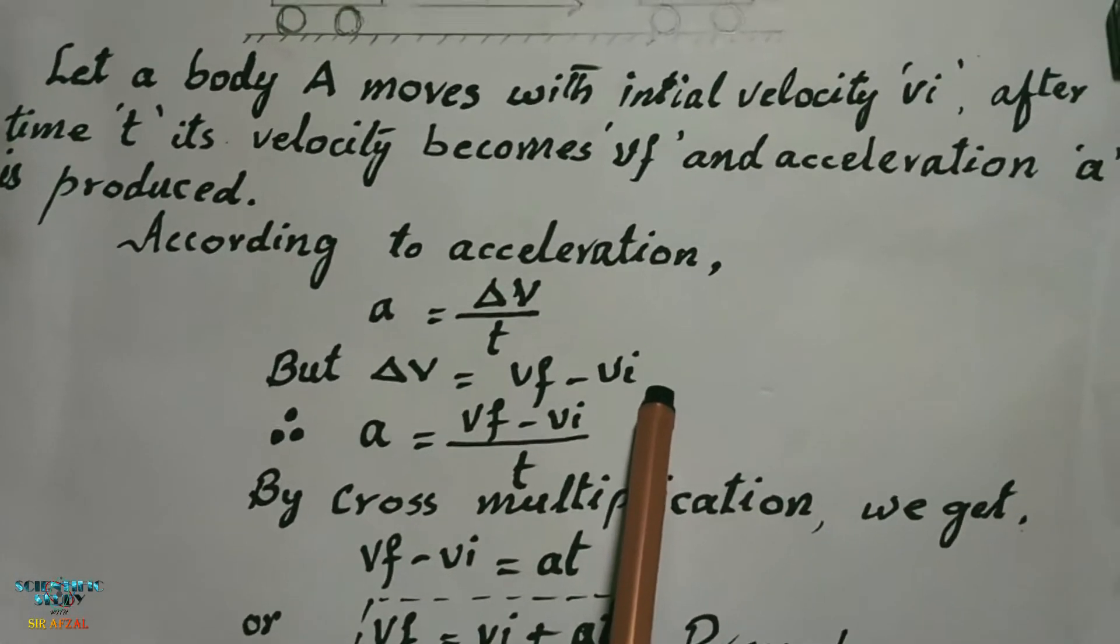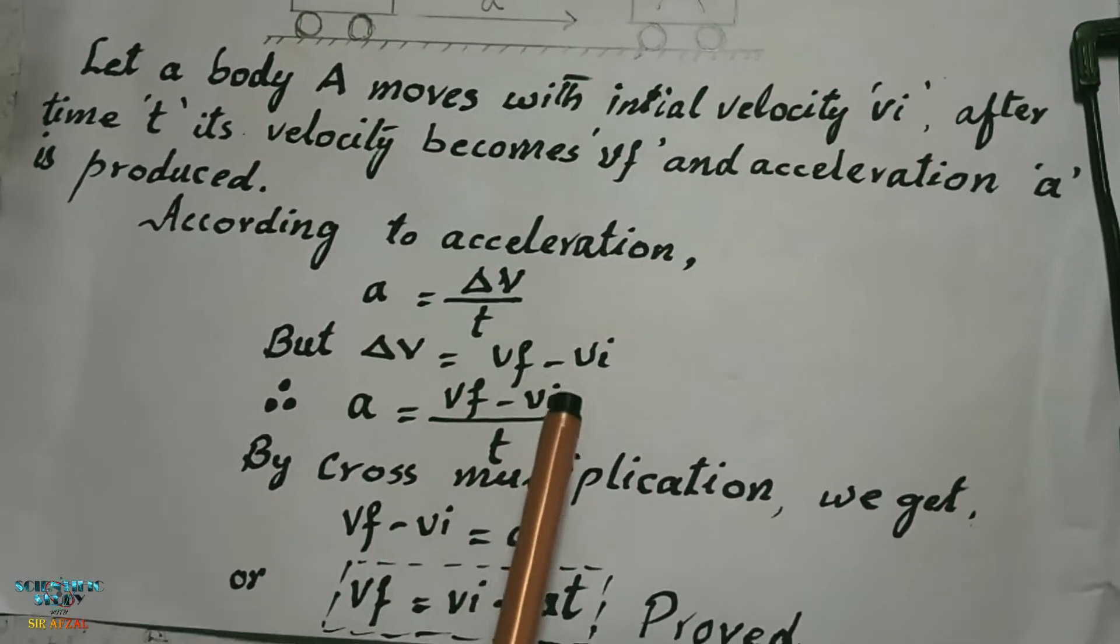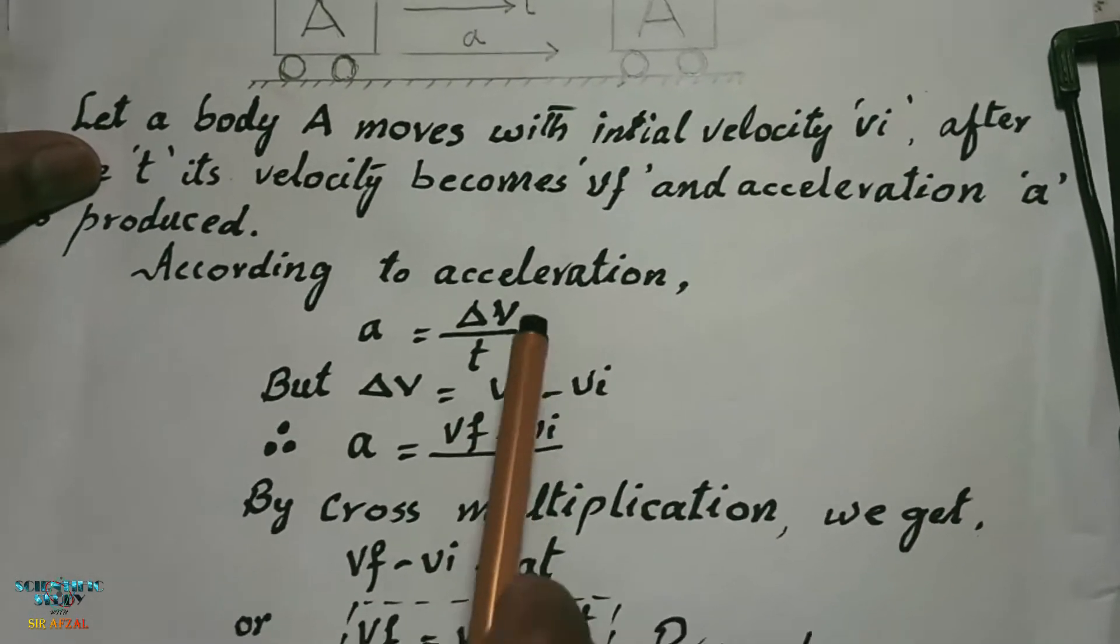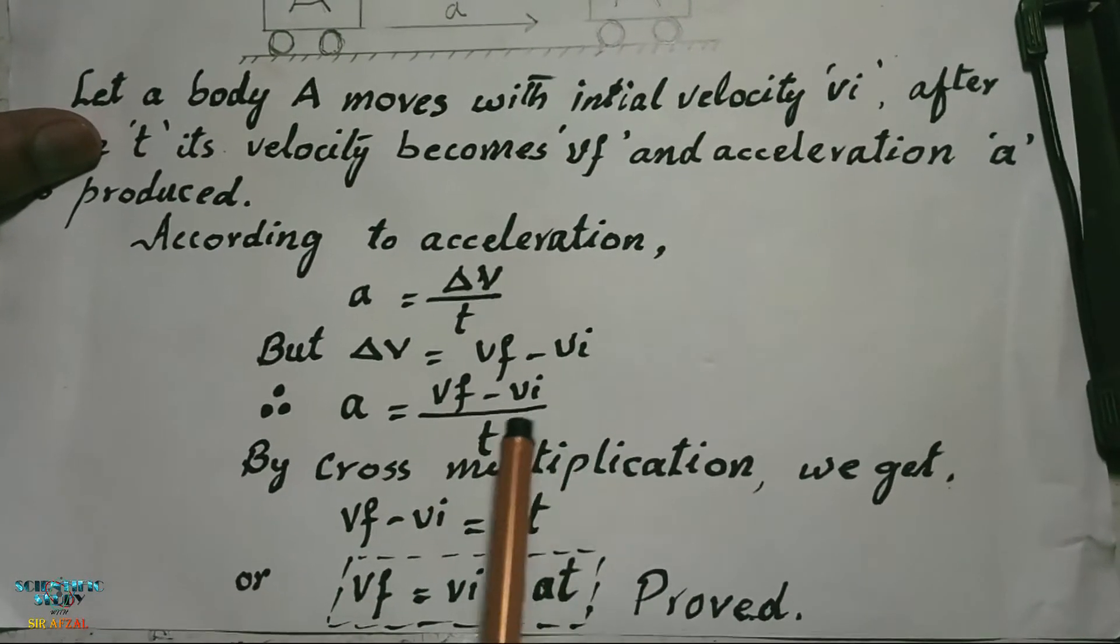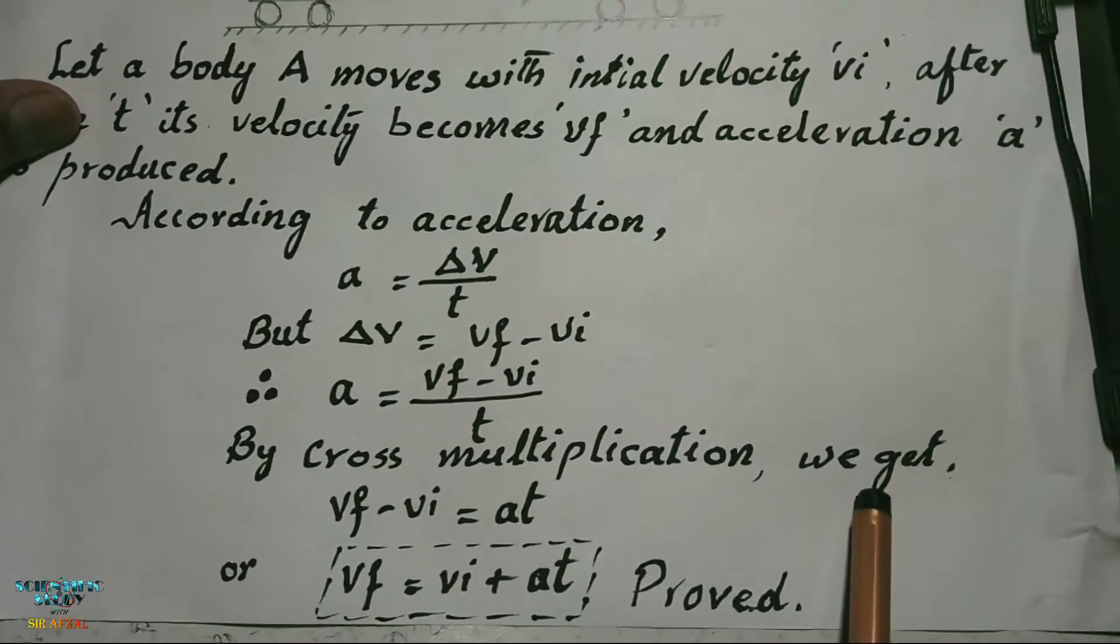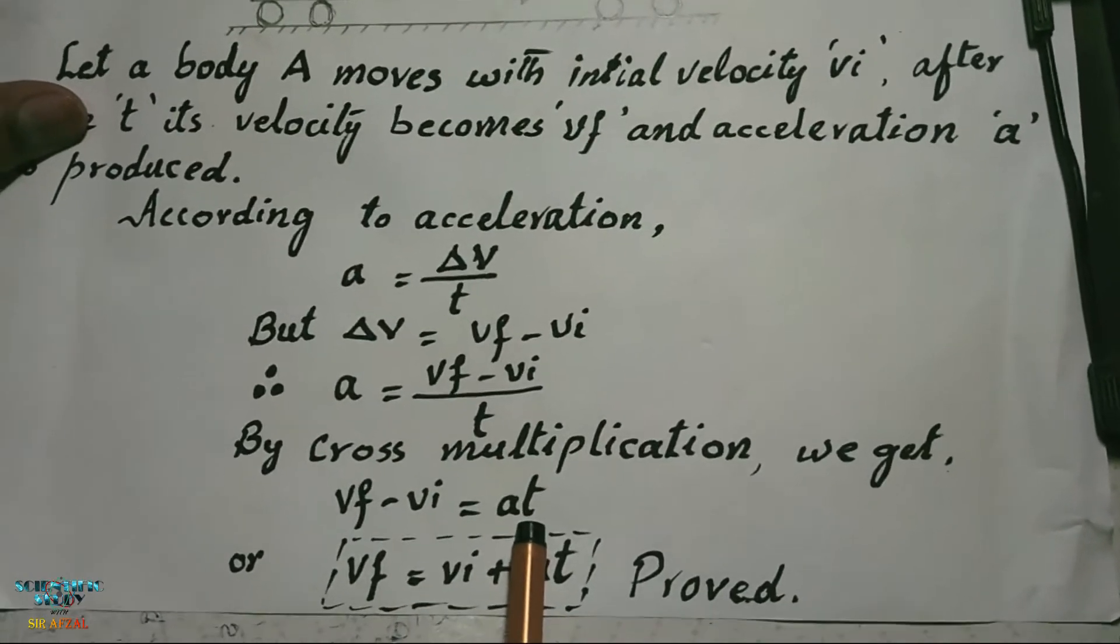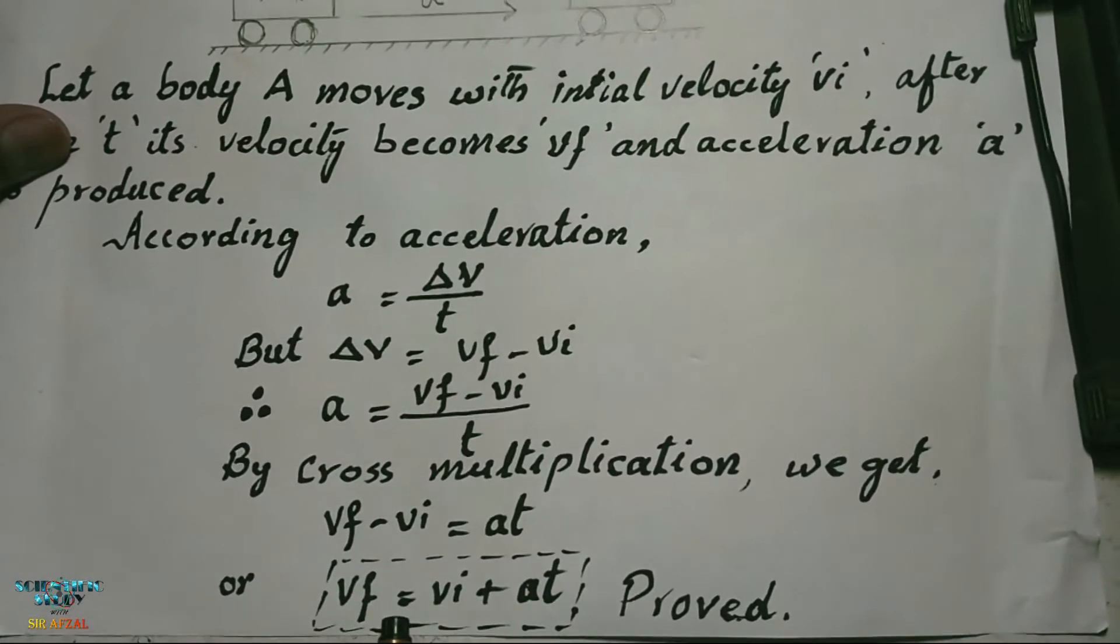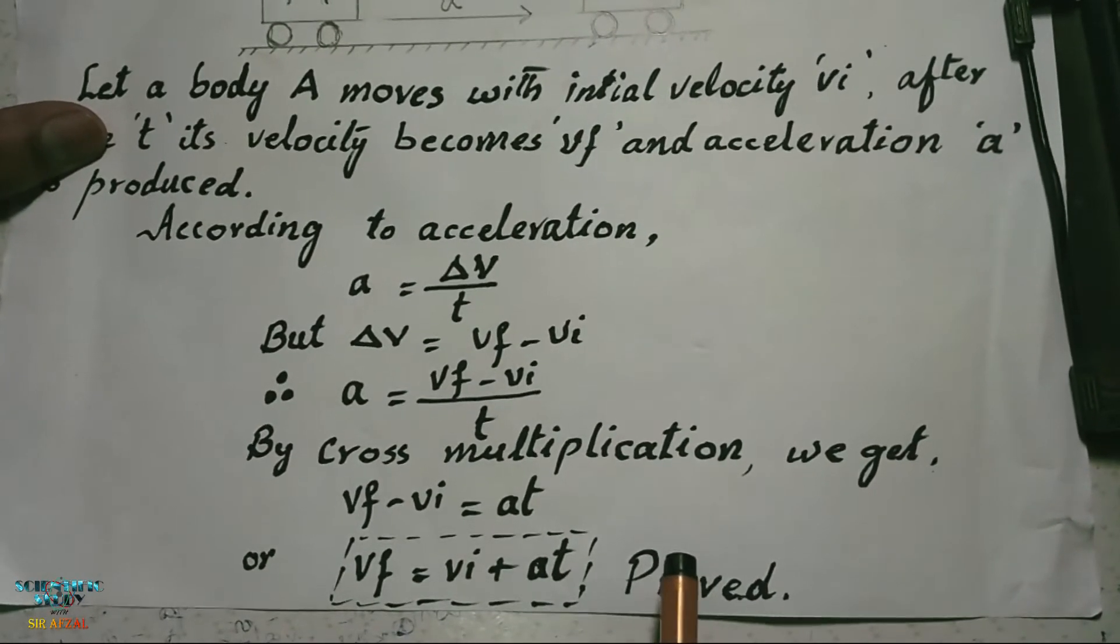Now by putting the value of Δv in above equation we get a is equal to vf minus vi upon t. By cross multiplication we get vf minus vi is equal to at, or vf is equal to vi plus at.